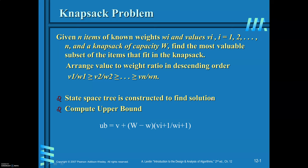Since this is an optimization problem where you are required to maximize the value, you need to find out the upper bound. The upper bound formula is: UB = V + (W minus w_i) times (V_{i+1} / W_{i+1}). I will explain this with the problem.